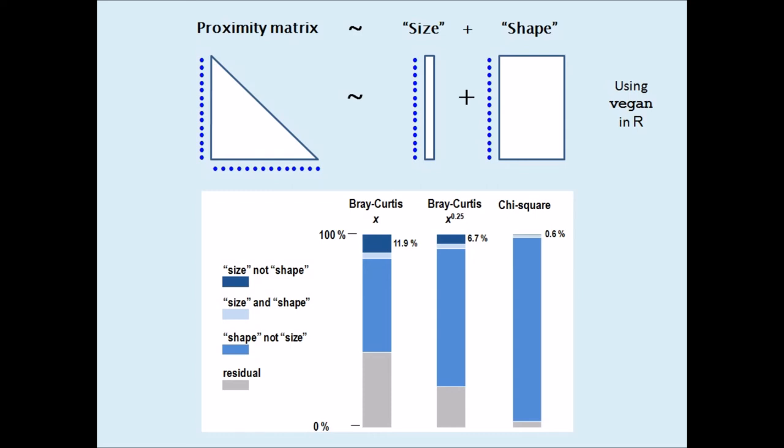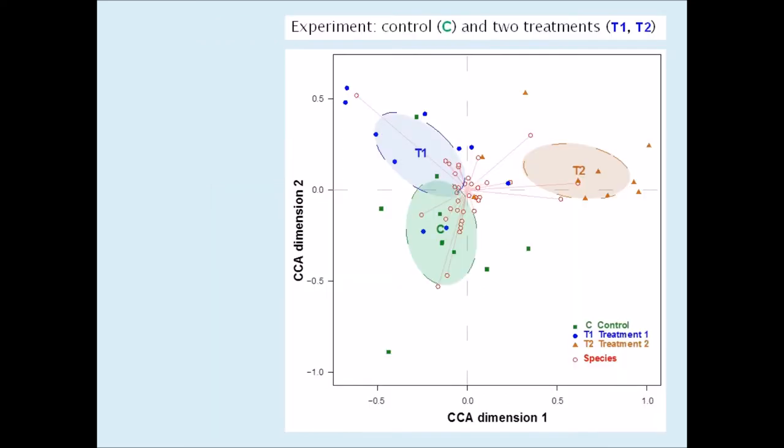Apart from a simulation exercise in the article which would further convince you that Bray-Curtis incorporates size differences between samples, I also show this CCA ordination of some experimental data involving species counts in several control samples as well as two sets of treatment samples. These 95% confidence ellipses suggest that there is a significant difference between the control and treatment 2, but not between the control and treatment 1.